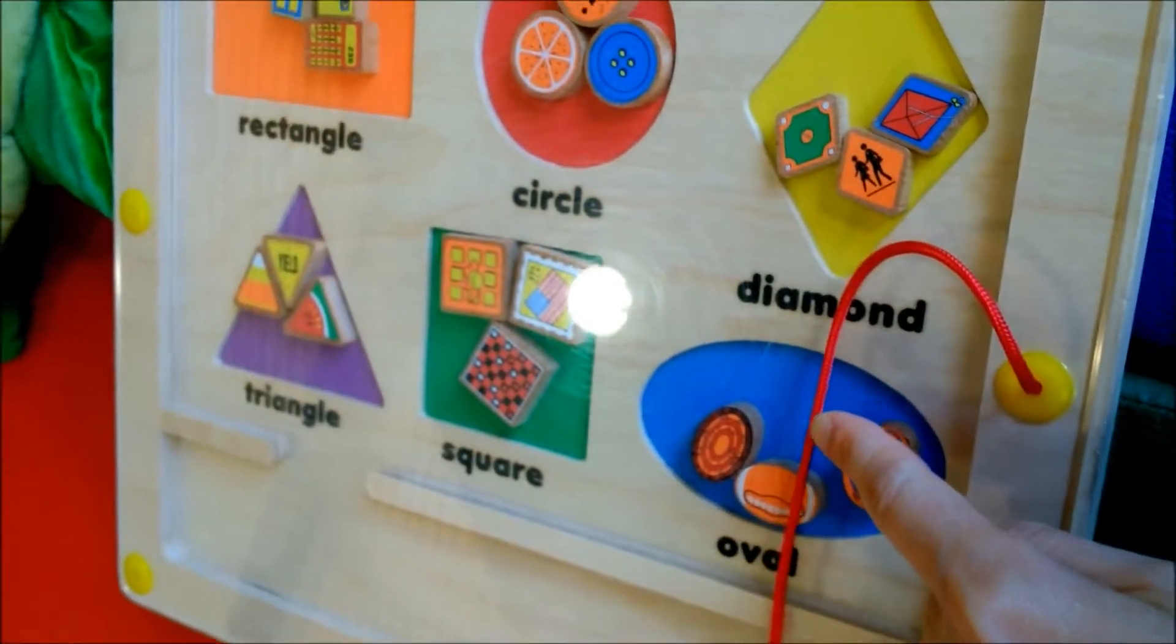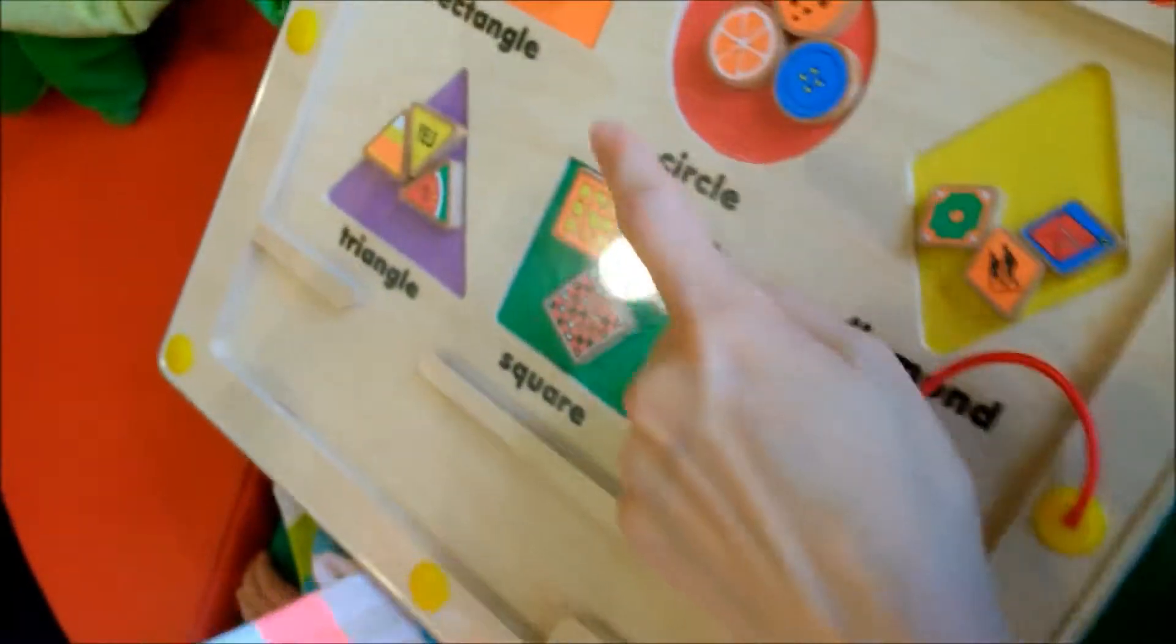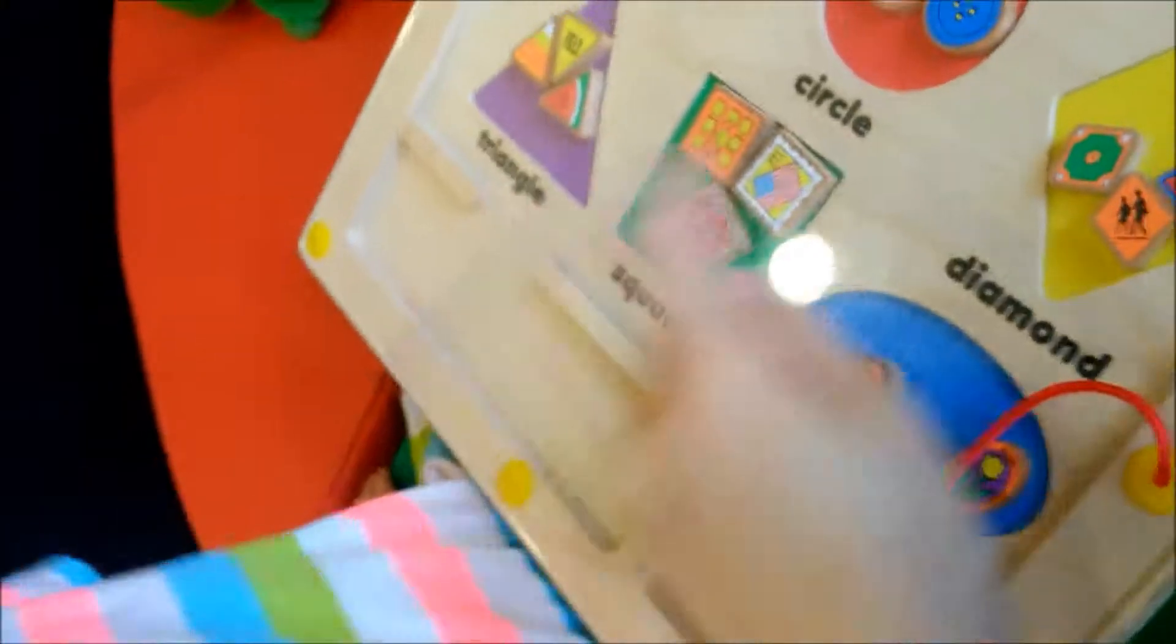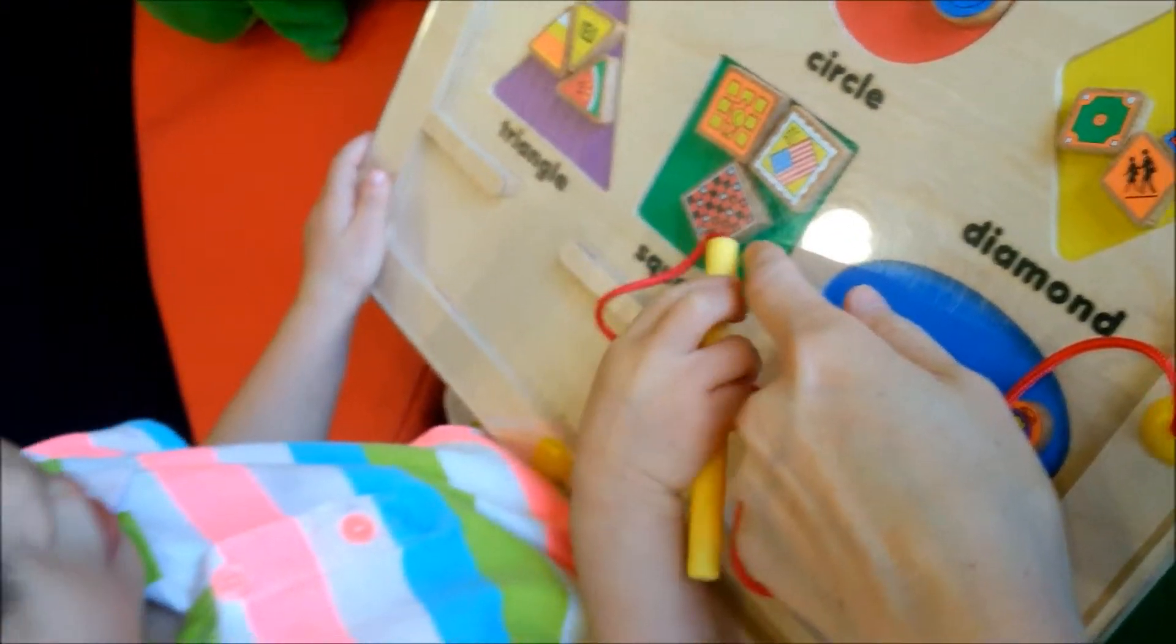What color is this? Blue. What's this one? Yellow. What's that one? Red. Red. What's this one? What color is this? Green. Green.